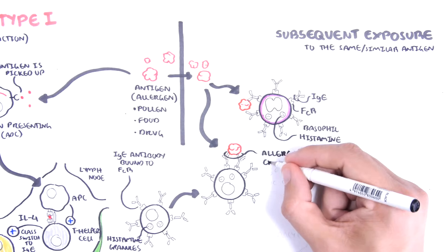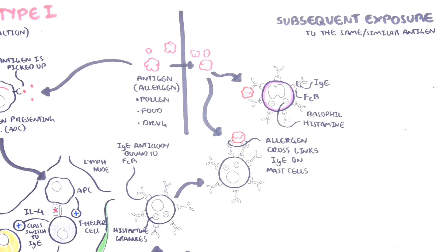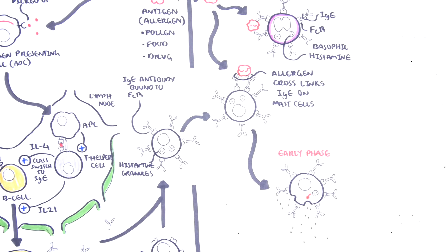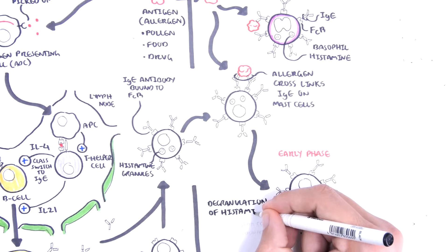Then, the allergen cross-links IgE on mast cell surface, activating these cells to degranulate and release their granules of histamine within minutes.